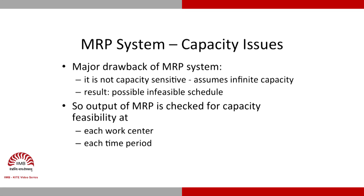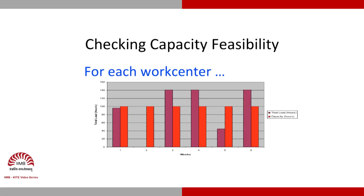The output of MRP is checked for capacity feasibility at each work center and each time period. We can visualize capacity evaluations where the x-axis shows different time periods. For each work center and each week we have two blocks: how much load there is and how much capacity is available. In week one, load and capacity are balanced; week two has low load but full capacity; in week three, load exceeds capacity — making the entire plan infeasible.